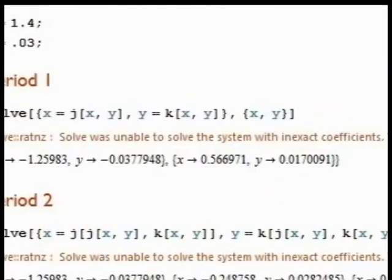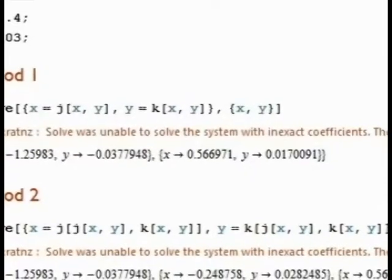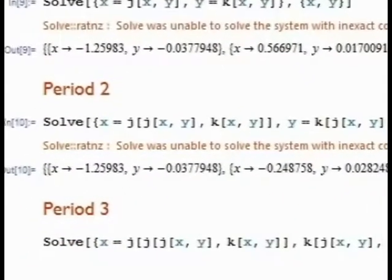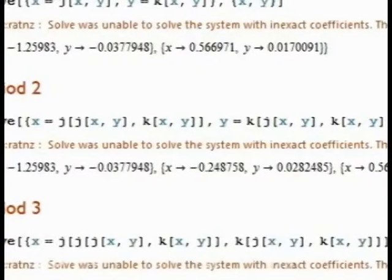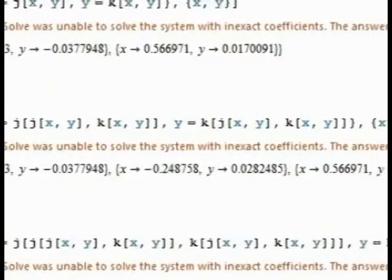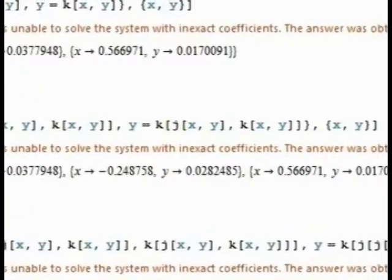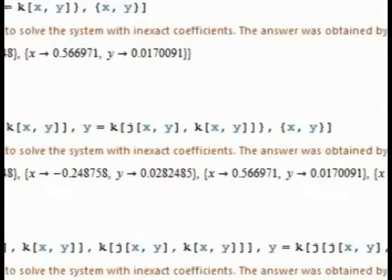Let's look at the general Henon map. The common choice is 1.4 for alpha and 0.3 for beta, due to the fact that at this point the Henon map is known to be chaotic. We can see that fixed points exist in period 1, period 2, and in period 3. Because they exist in period 3, this implies that the system is chaotic.